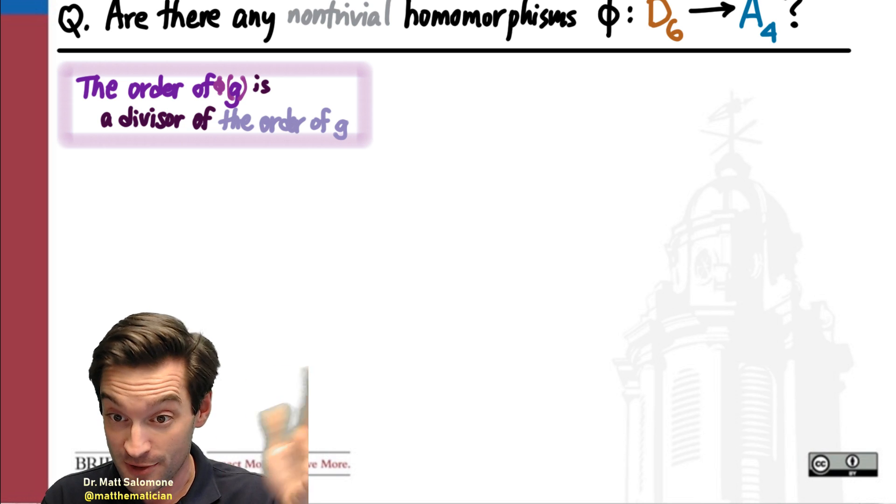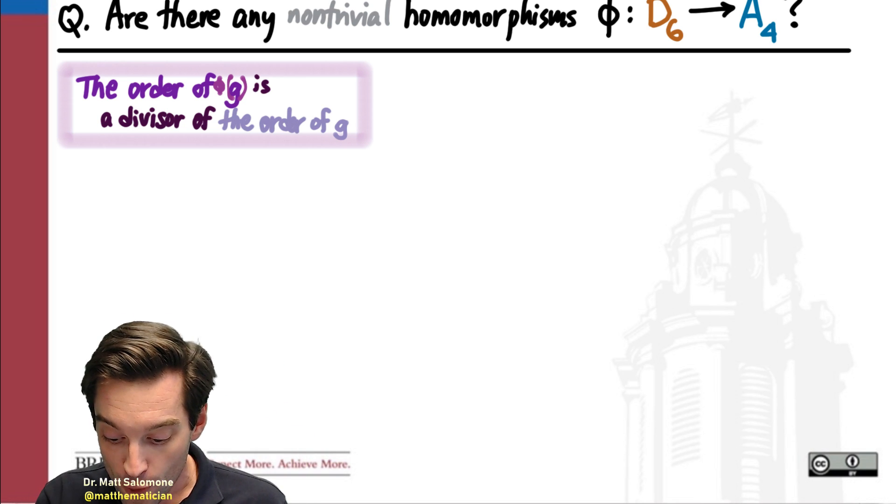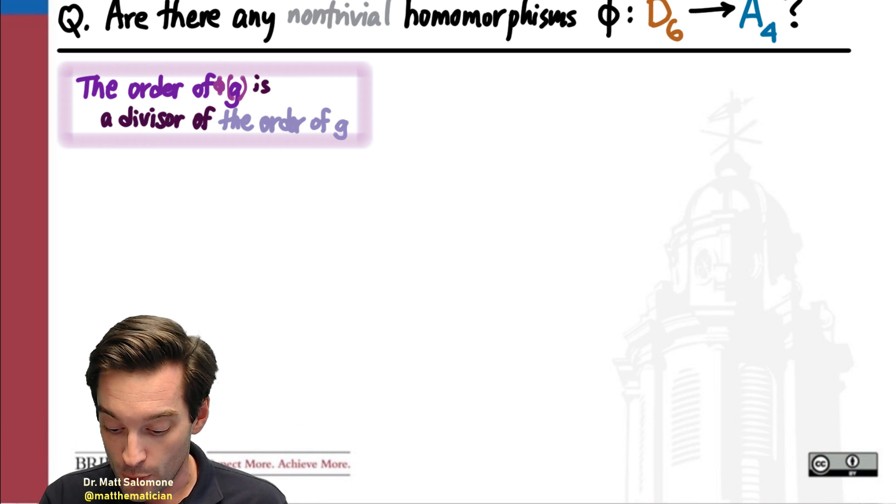but it cannot have, for example, order 5. So the order of the image has to be a divisor of the order of the original element.